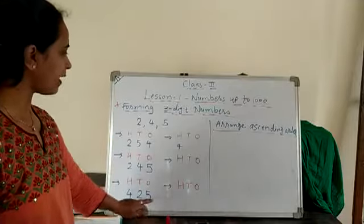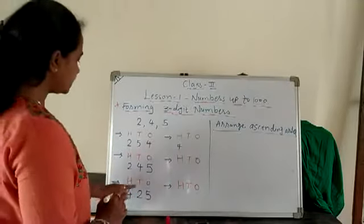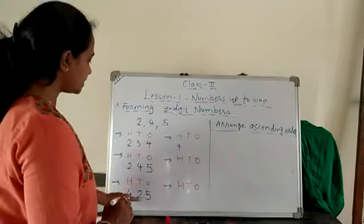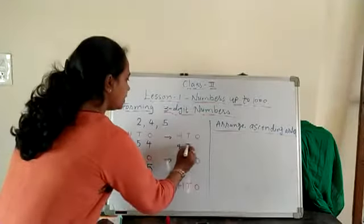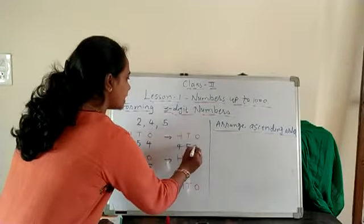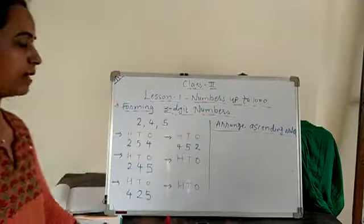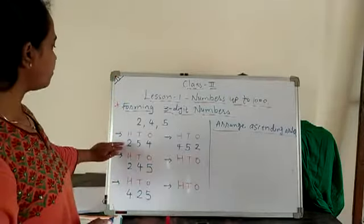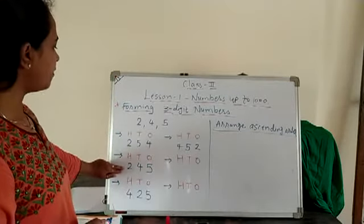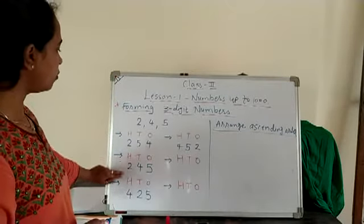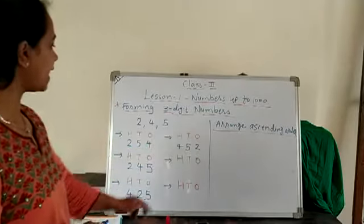Then interchange 2 and 5. So 2 is in the 10s place and 5 is in the 1s place. Interchange: 5 is in the 10s place and 2 is in the 1s place. So 2 times we used 100s place with 2, and 2 times 100s place with 4.